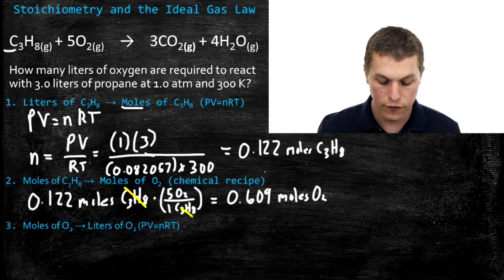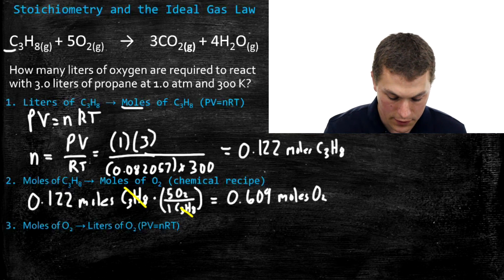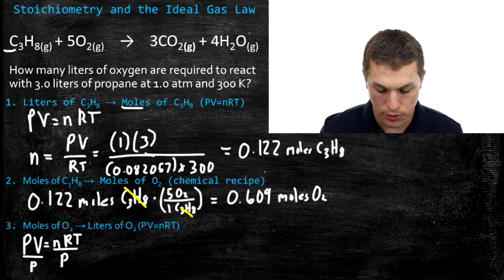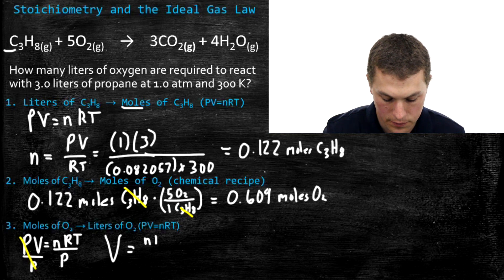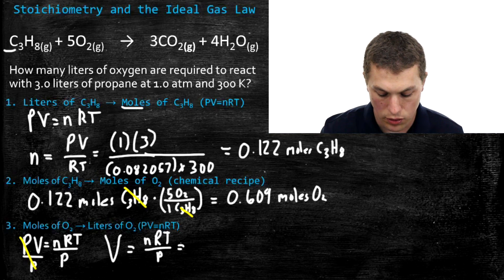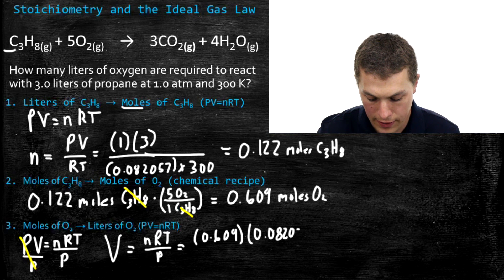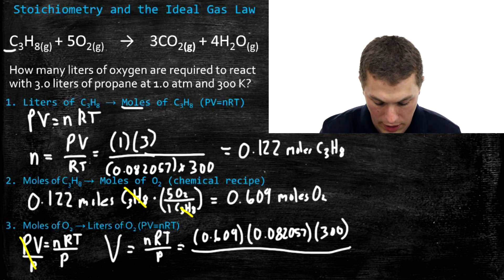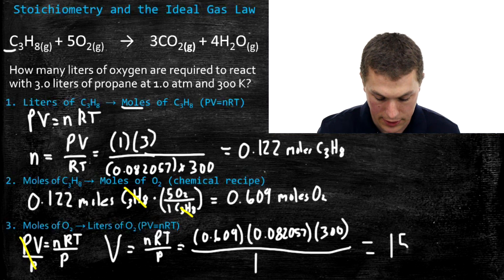Step 3: go from moles of oxygen to liters of oxygen. Starting again with PV = nRT, but now solving for volume — divide both sides by P to get V = nRT / P. Plugging in: n = 0.609 moles, R = 0.082057, T = 300 K, P = 1 atm. That gives us our volume of oxygen, which to two sig figs is 15 liters of O2.